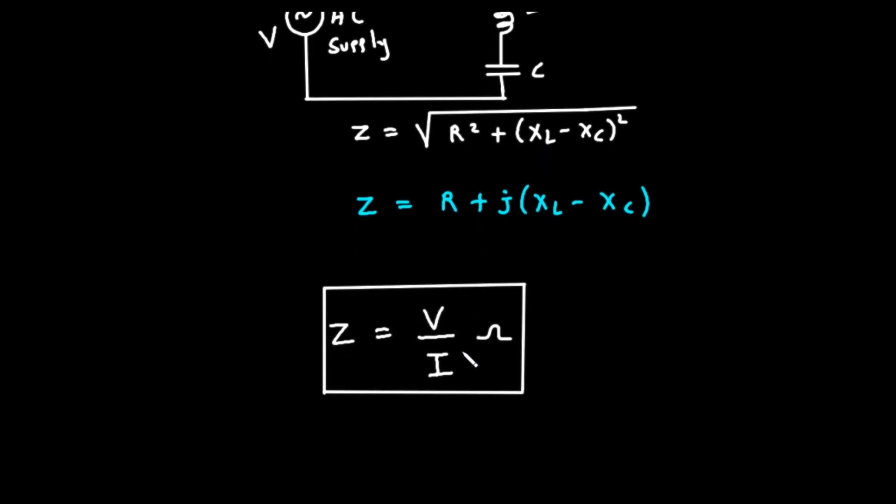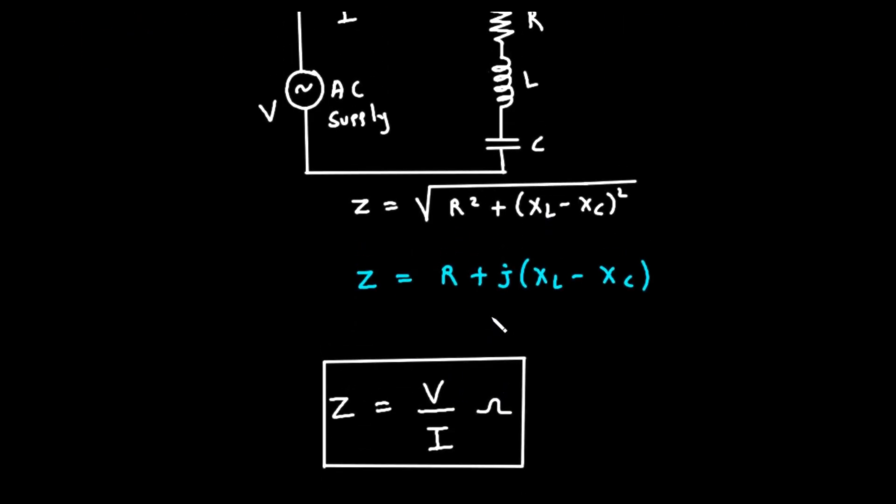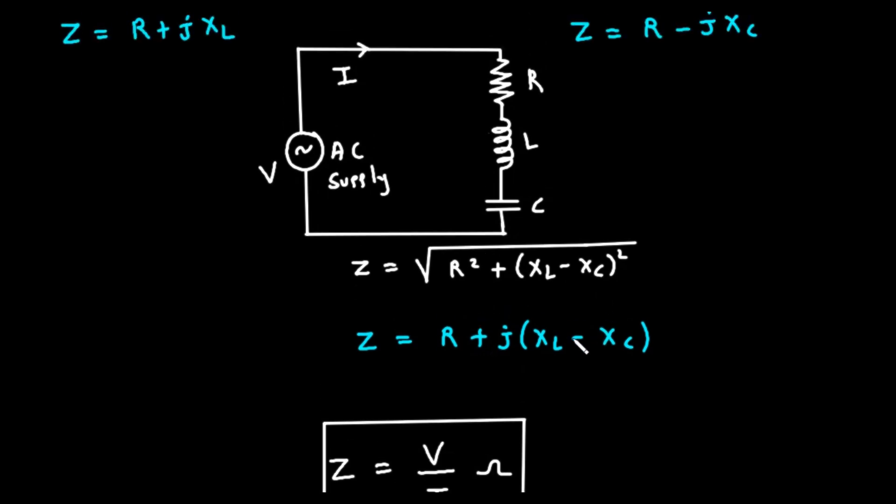This single formula covers all possibilities. If there's no capacitor, X sub C is zero, and we get the RL formula. If there's no inductor, X sub L is zero, and we get the RC formula.